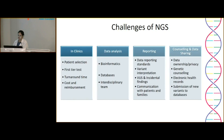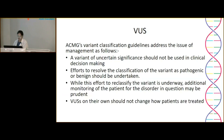Among day-to-day challenges, one of the most difficult is interpreting VUS. ACMG guidelines state that a VUS should not be used in clinical decision-making; rather, efforts to resolve its classification as pathogenic or benign should be undertaken. While reclassification is attempted, additional monitoring of the patient may be prudent. VUS on their own should not change how patients are treated.